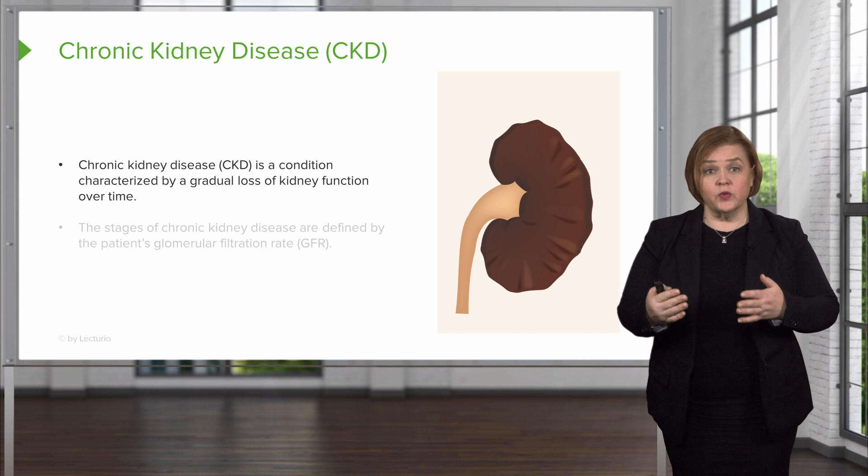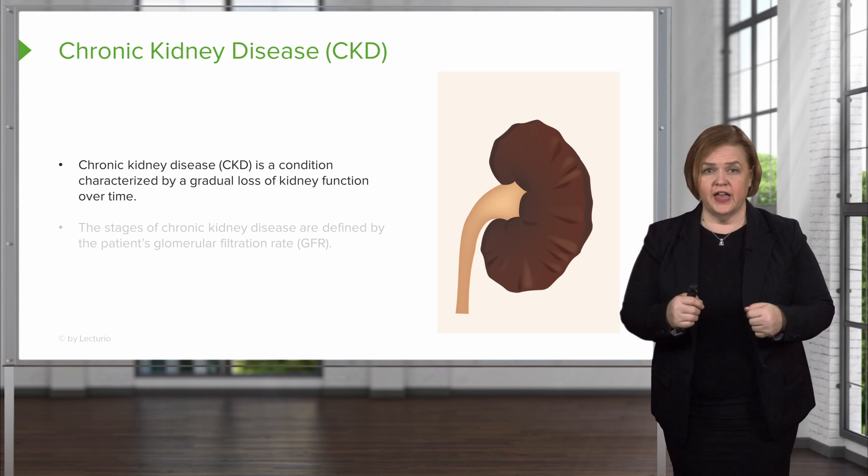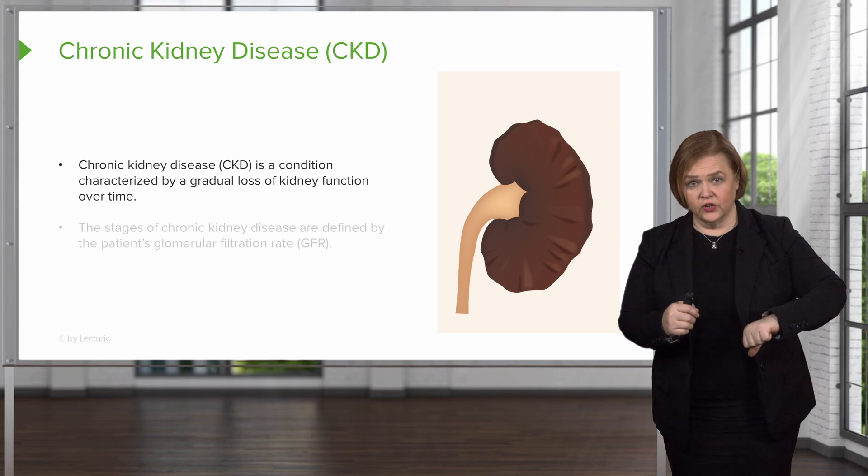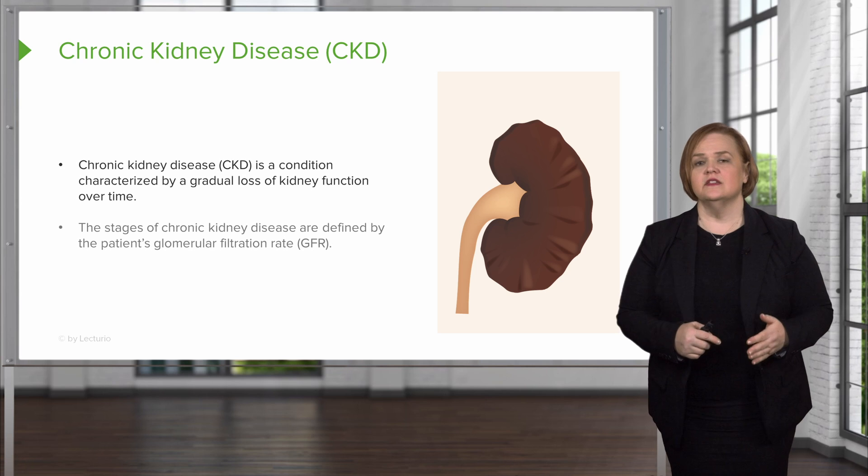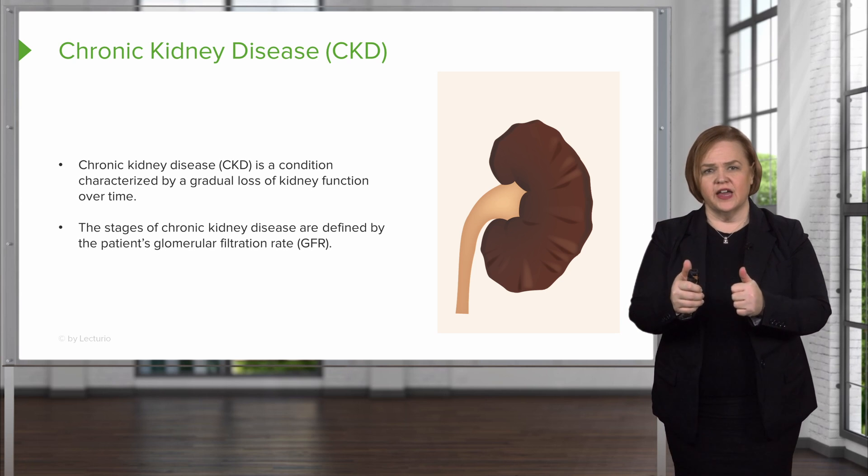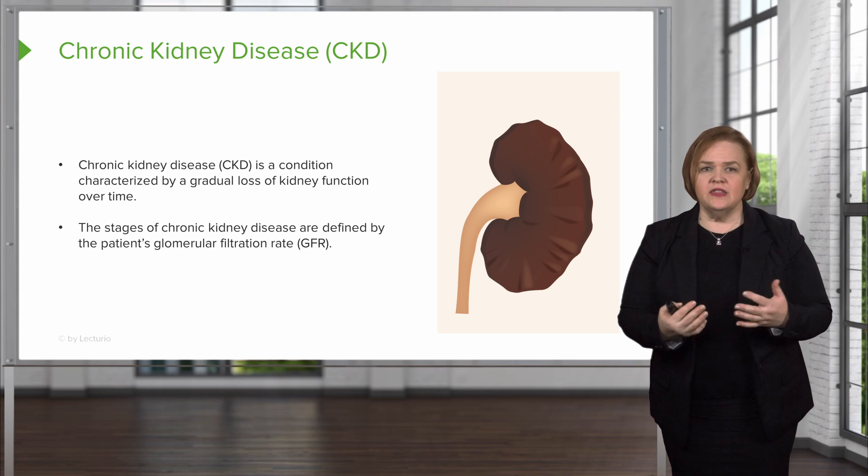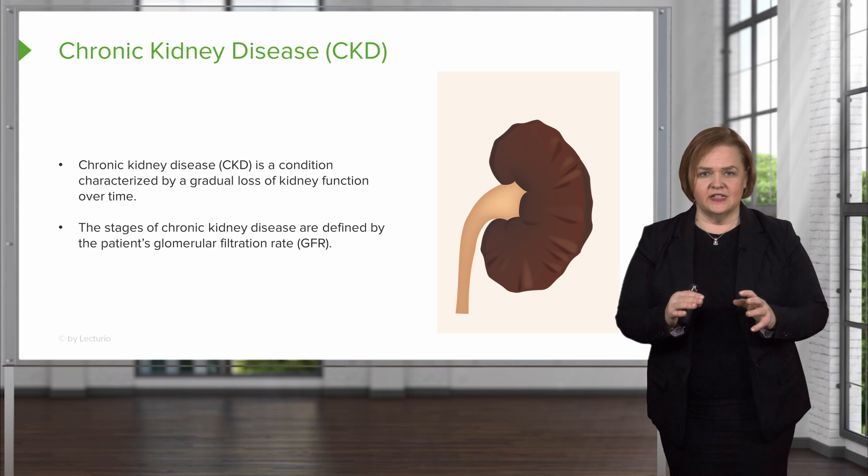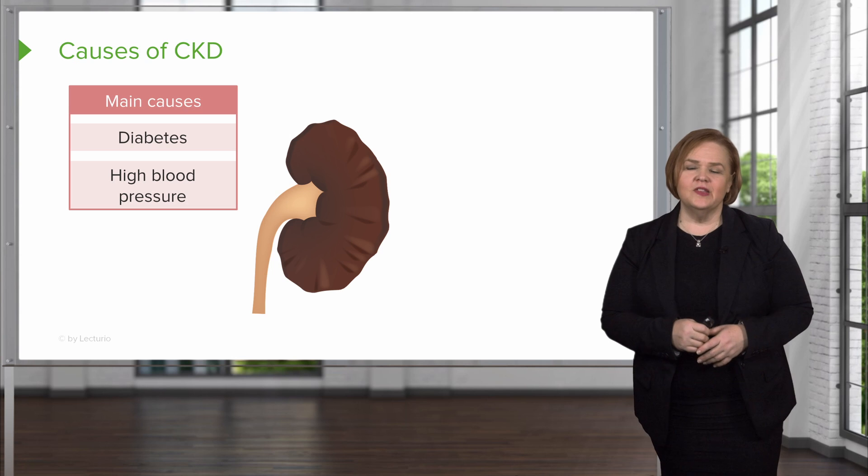Now we come up with definitions of everything. Remember we defined acute kidney injury as an increase in serum creatinine and a decrease in urine. Now we're going to talk about the stages of chronic kidney disease and the measurement we're going to use for that - our glomerular filtration rate. It will be the estimated glomerular filtration rate. We get that from the creatinine because it's just too complicated to get the actual one.